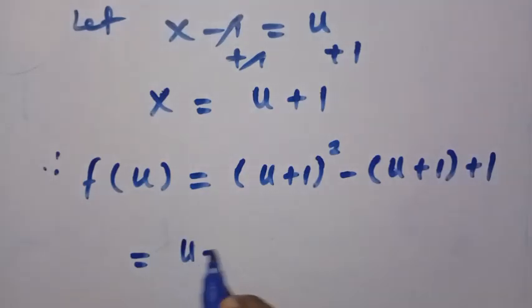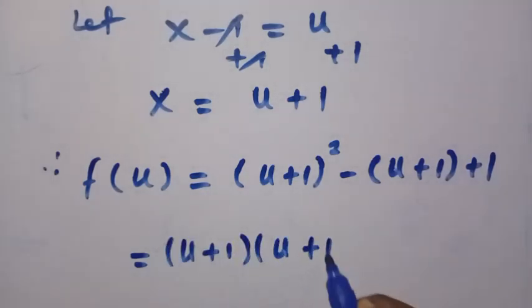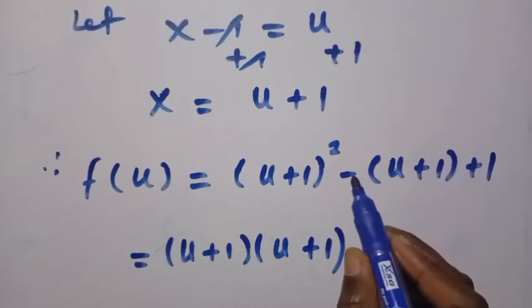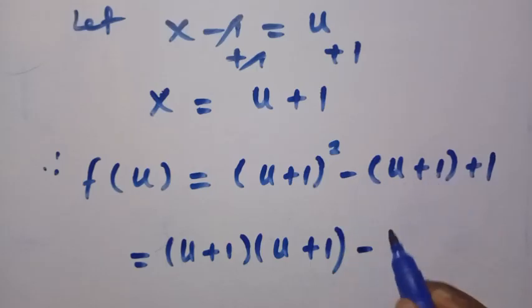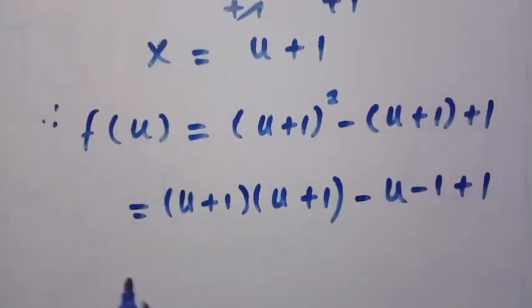We try to expand u plus 1 squared. u plus 1 squared is u plus 1 multiplied by u plus 1. Then we multiply this also as minus u minus 1, then plus 1. As this is what we got. Then let's multiply this together.